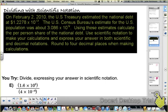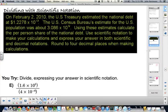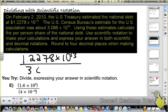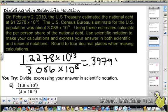Using these estimates, calculate the per person share of the national debt. So you need to take 1.2278 times 10 to the 13th divide by 3.086 times 10 to the 8th. Same thing as with multiplication. You actually do 1.2278 divided by 3.086 and that is 0.3979 times 10 to the 13th.